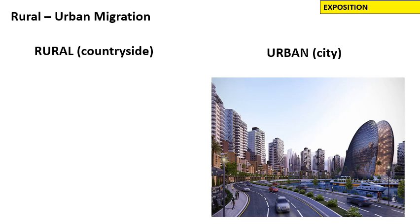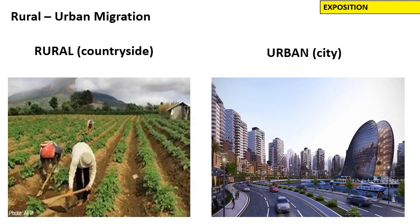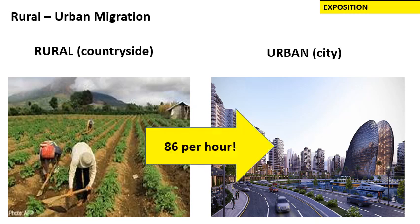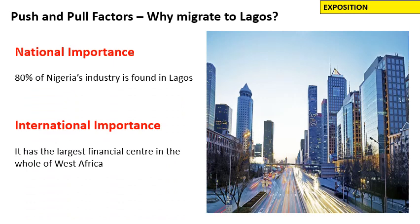We know from last lesson that most of the people arriving in Lagos are coming from the countryside. This is called rural urban migration — the movement from the rural area to the urban area. In Nigeria, 86 people per hour are moving from the countryside to the city. That is an incredible number. So the question is, why are so many people moving from the rural areas to the urban areas every hour? Why are they migrating to Lagos?